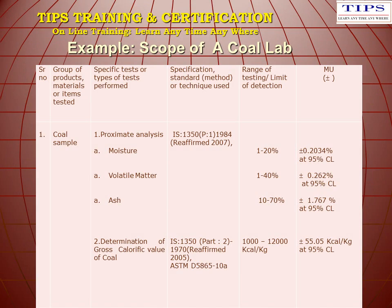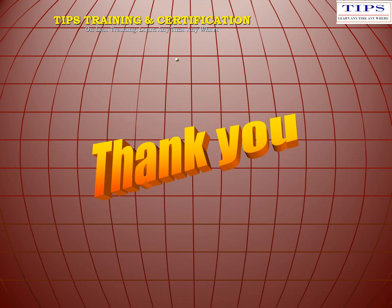This is one example of the scope of a core lab. In the first column you can see specific tests and types of tests performed. The second column shows the specification, standard method, or technique used. The third column shows the range of testing and limit of detection. The last column indicates the measurement of uncertainty at the 95 percent confidence level. Thank you.